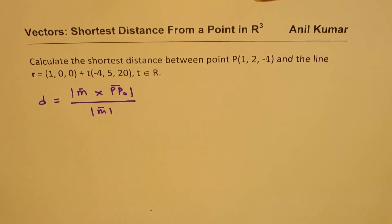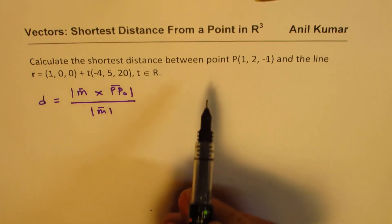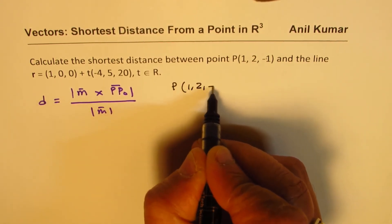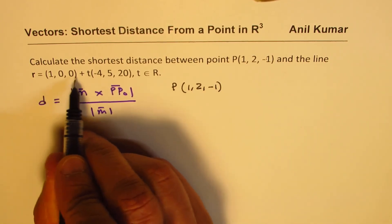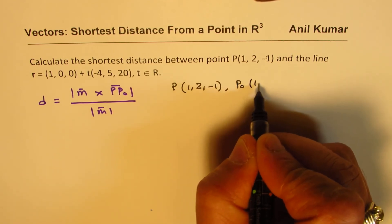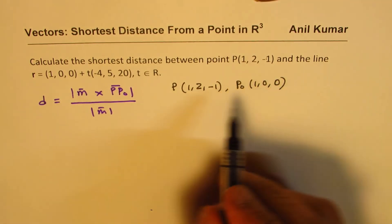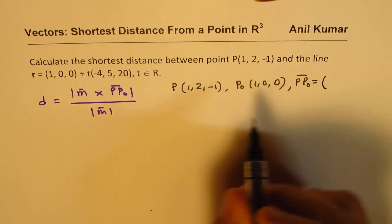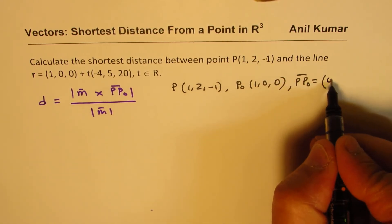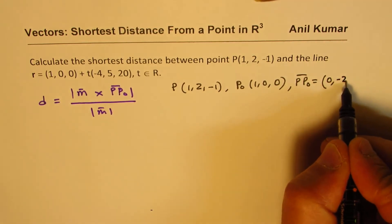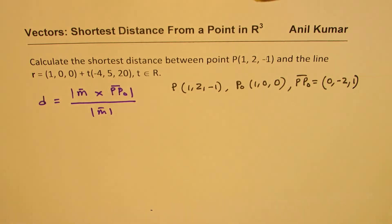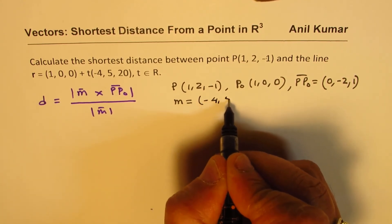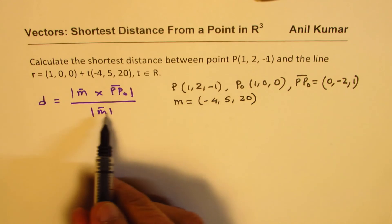What we are given: point P = (1, 2, −1), and a point on the line P0 = (1, 0, 0). From here we find vector PP0 = (1−1, 0−2, 0−(−1)) = (0, −2, 1). The direction is M = (−4, 5, 20).